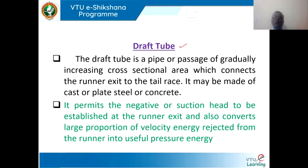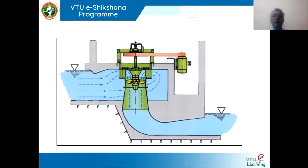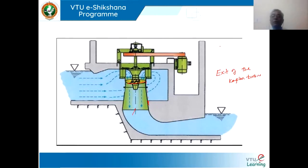The draft tube is connected to the end of the Kaplan turbine — at the exit of the runner. The draft tube is a gradually expanding pipe, conical in shape with enlarging diameter at the exit. The purpose of the draft tube is to decrease the velocity as the water flows out, so that the pressure increases. This increases the efficiency of the turbine.